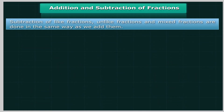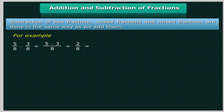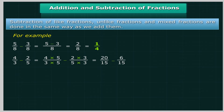Subtraction of like fractions, unlike fractions, and mixed fractions is done in the same way as addition. For example, 5 upon 8 minus 3 upon 8 equals (5 minus 3) upon 8, which equals 2 upon 8, which equals 1 upon 4. For unlike fractions: 4 upon 3 minus 2 upon 5 equals (4×5) upon (3×5) minus (2×3) upon (5×3), which equals 20 upon 15 minus 6 upon 15, which equals 14 upon 15.